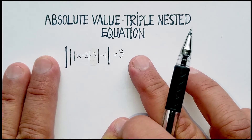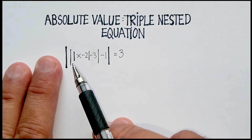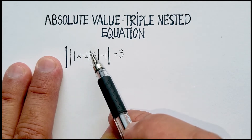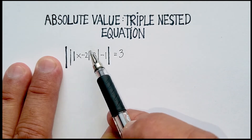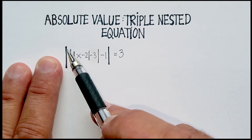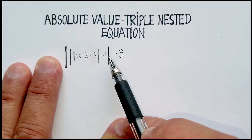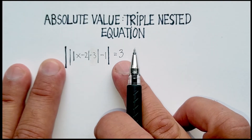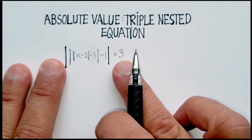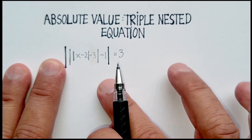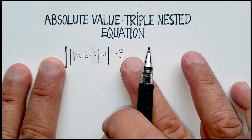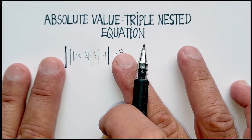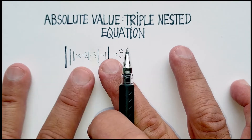In this equation here, we've basically set up a triple-nested absolute value — inside another absolute value inside a third absolute value. Remember that when you start to solve an absolute value equation, you need the positive case and the negative case, and you basically just get rid of each of the absolute values in turn.